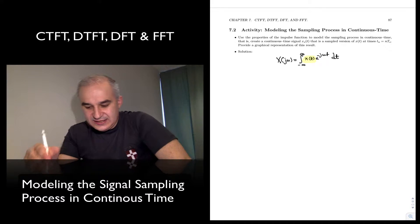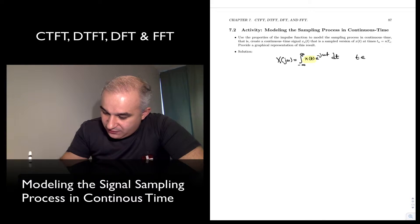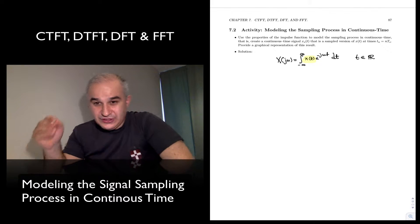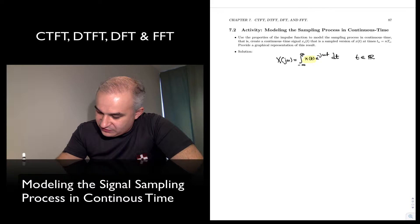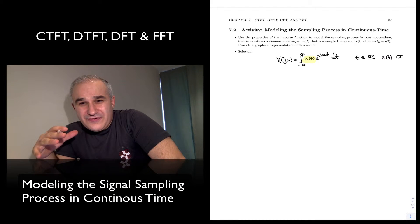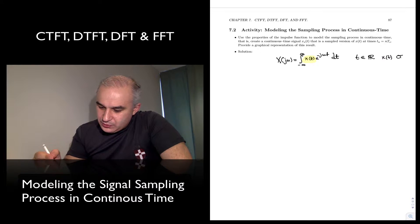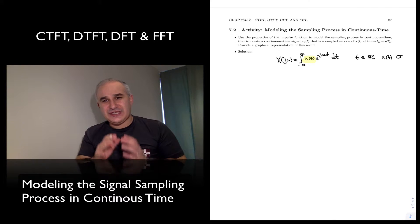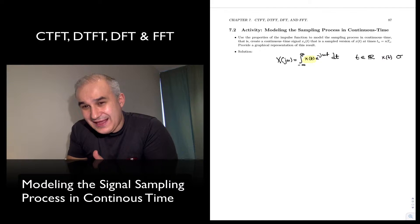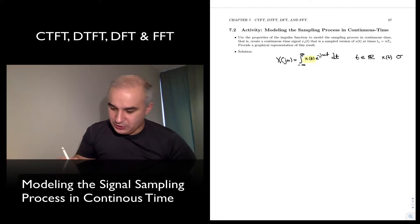That signal x(t) is a real-valued, continuous time signal. So if we want to see what the spectrum will be of a signal that we sampled, we need to model the sampling process in continuous time, so that we can plug it into this equation.